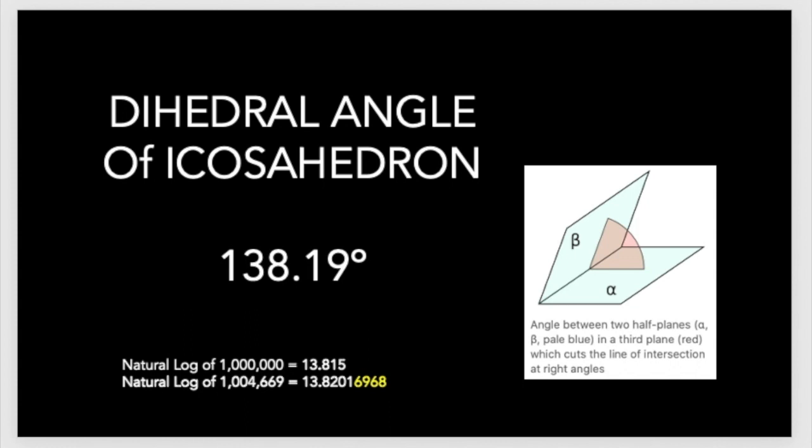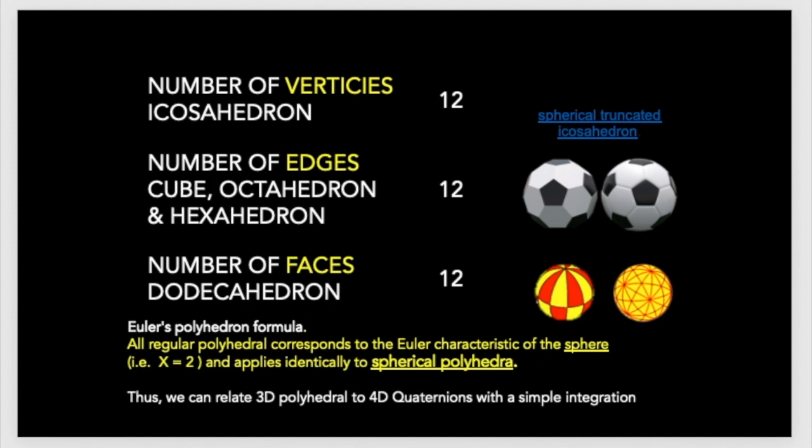Let's quickly run down a few things that are important. The number of vertices in an icosahedron is 12, the number of edges in a cube octahedron and hexahedron is 12, and the number of faces in a dodecahedron is 12. All regular polyhedron correspond to the Euler characteristic of the sphere, which means that the PQ number x equals 2.